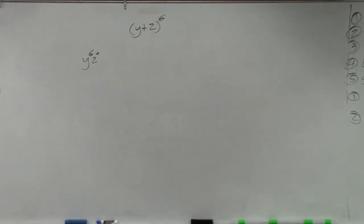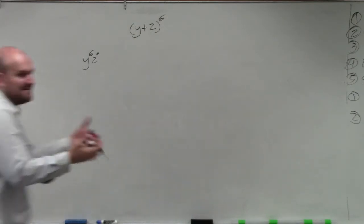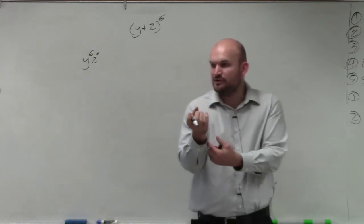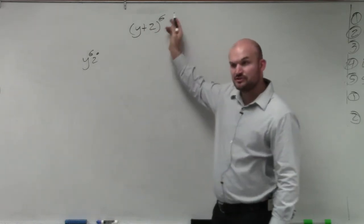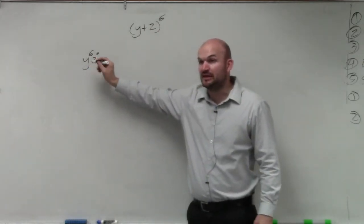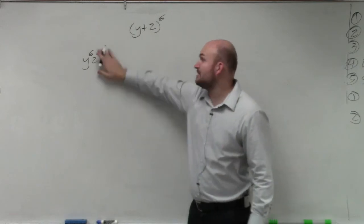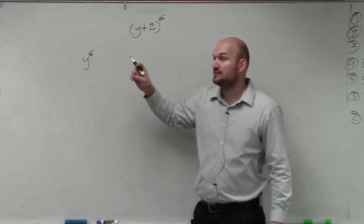Notice this, x plus 1 to the 4th. What was my first term? x to the 4th. It's always going to be that first term is going to be raised to that power of your expansion. So if this is y plus 2 to the 6th, I know my first term is going to be y to the 6th.